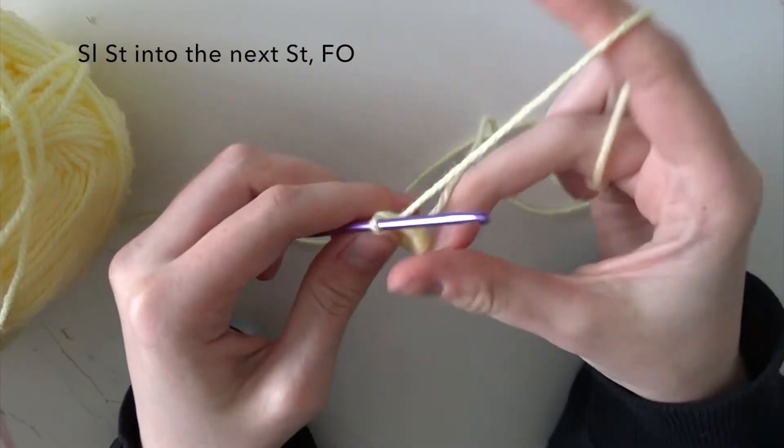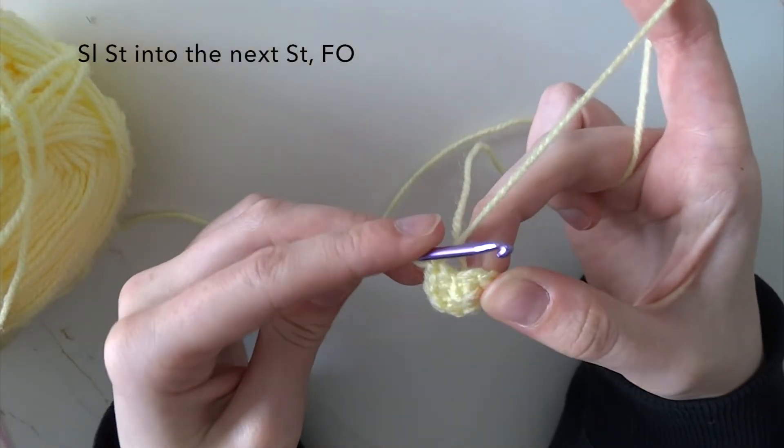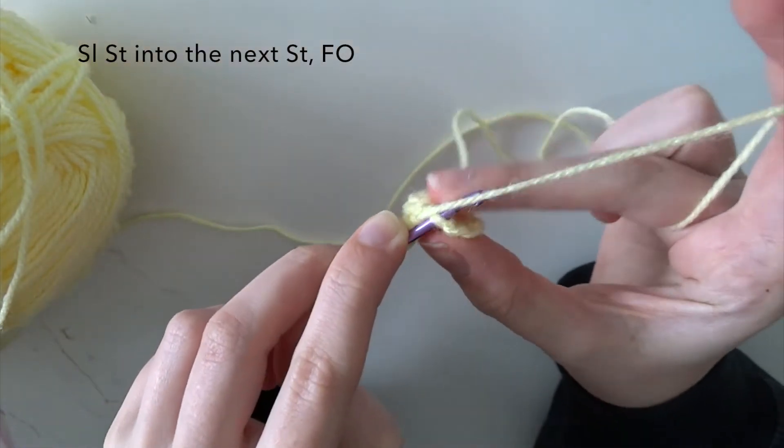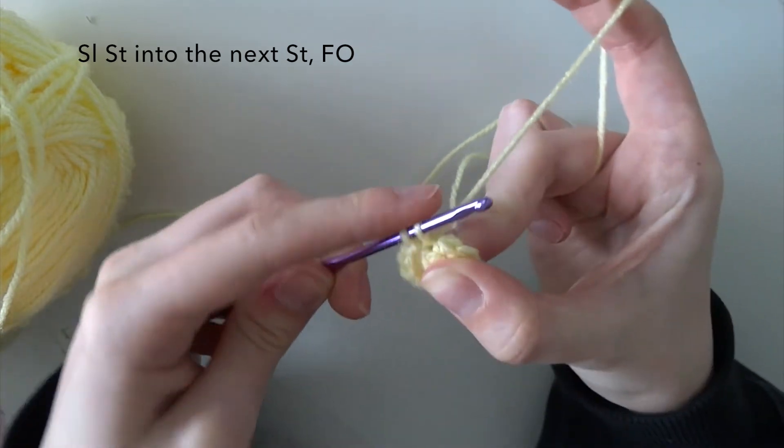After you've finished round two you will need to do a slip stitch into the next stitch and fasten off, and leave a small tail for sewing afterwards.